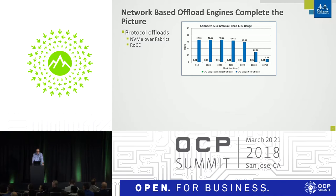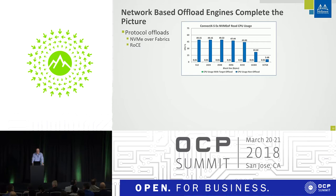For optimum performance we also need offload engines. This chart shows the CPU utilization required to run the test I showed earlier — to get the 6 million IOPS and full wire speed.